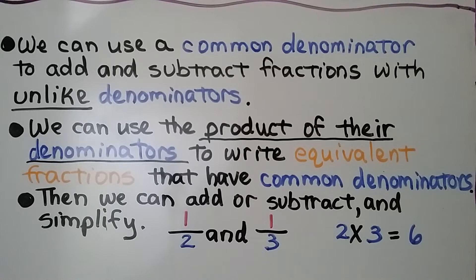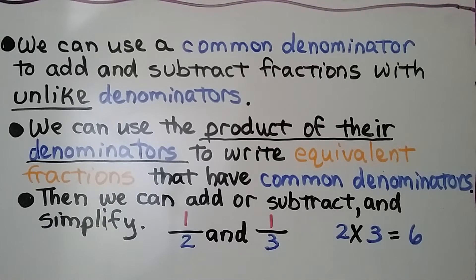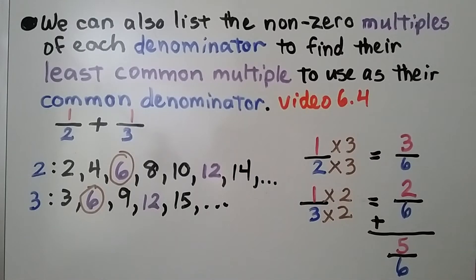Then we can add or subtract and simplify. If we have 1 half and 1 third, we can multiply 2 times 3 to use 6 as a common denominator. We can also list the non-zero multiples of each denominator to find their least common multiple to use as their common denominator. We have 1 half plus 1 third.